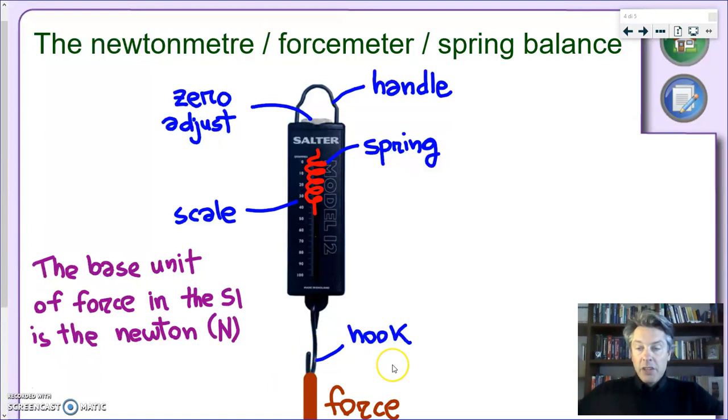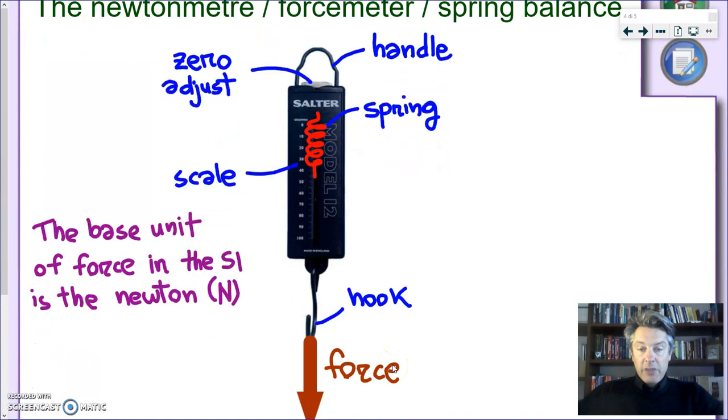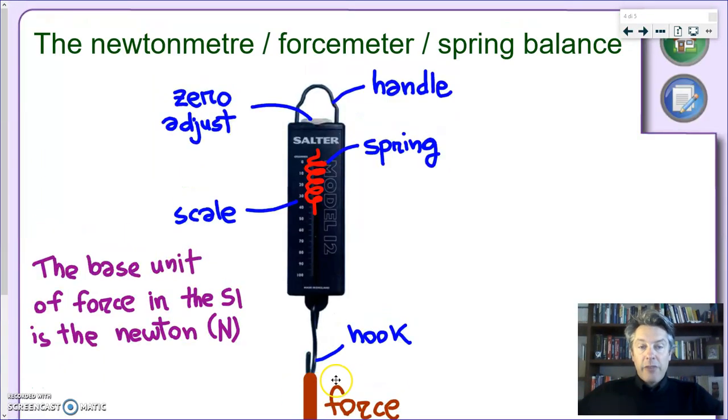And finally, here on the top, this is the zero adjust. And if you think a little bit, you will remember we've met the zero adjust before. We met in the case of the balance. Again, it's very important that you check that your instrument measures zero when there's nothing hanging from here. If not, you'll need to turn the zero adjust knob.